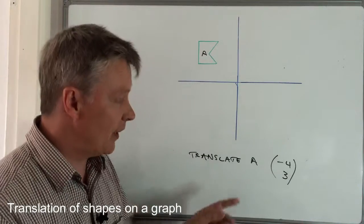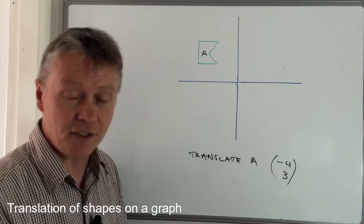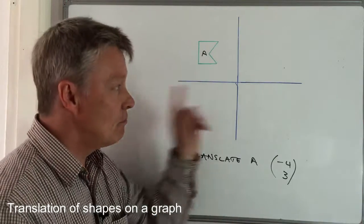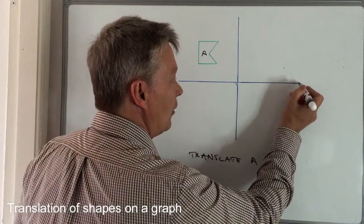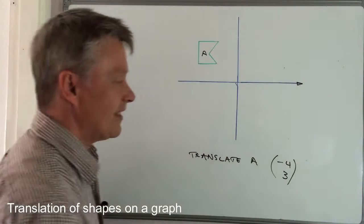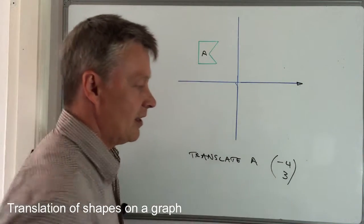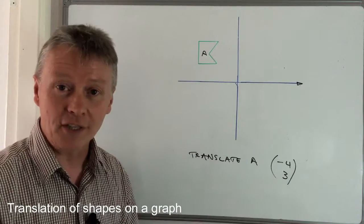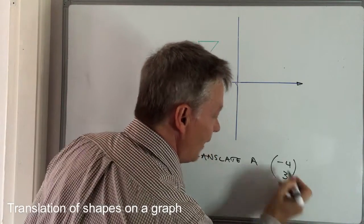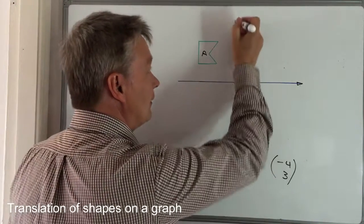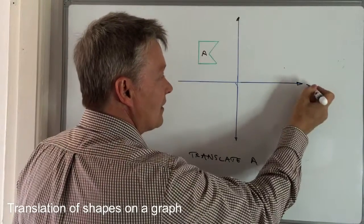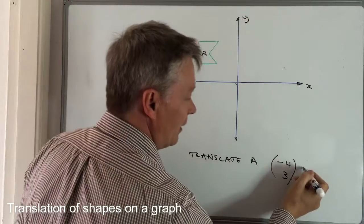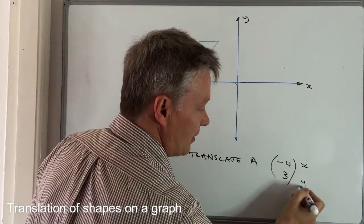You might remember from the previous videos that this minus four relates to the movement along the x-axis, and the bottom number relates to the movement along the y-axis. So this is x, this is y, this is x and this is y.